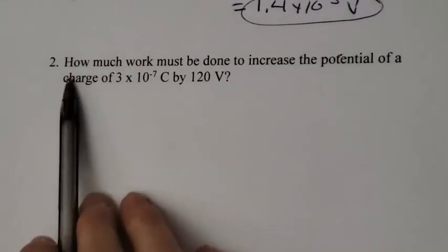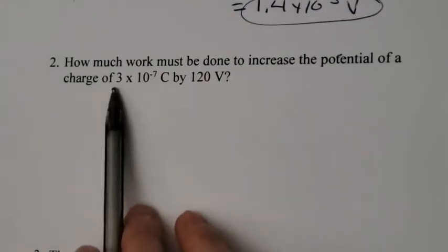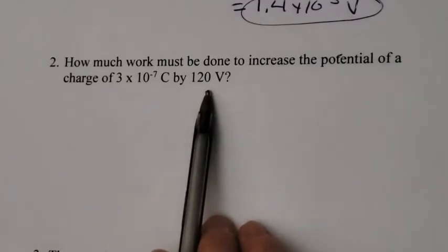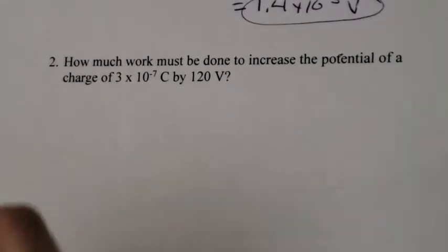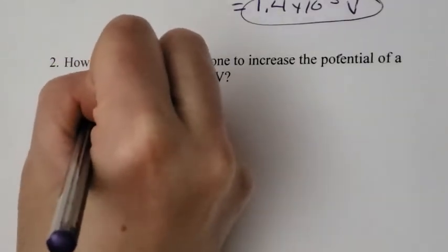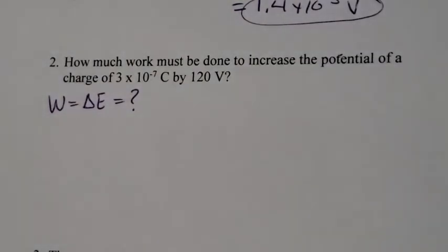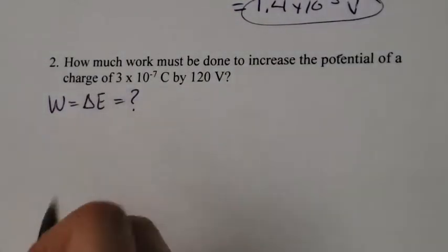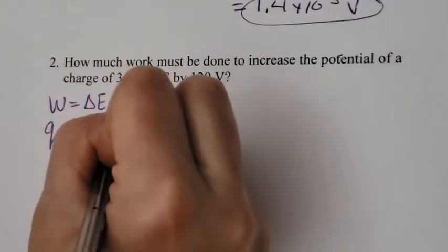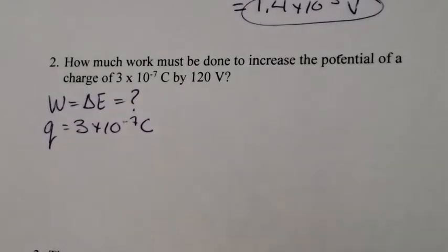Example number 2: How much work must be done to increase the potential of a charge of 3 times 10 to the negative 7 coulombs by 120 volts? So we're looking for the work, and work is the same thing as saying the change in energy. We're given the charge, so the charge Q is 3 times 10 to the negative 7 coulombs, and the voltage is 120 volts.